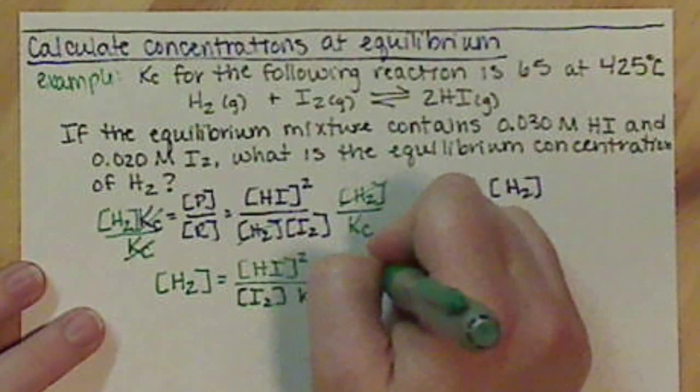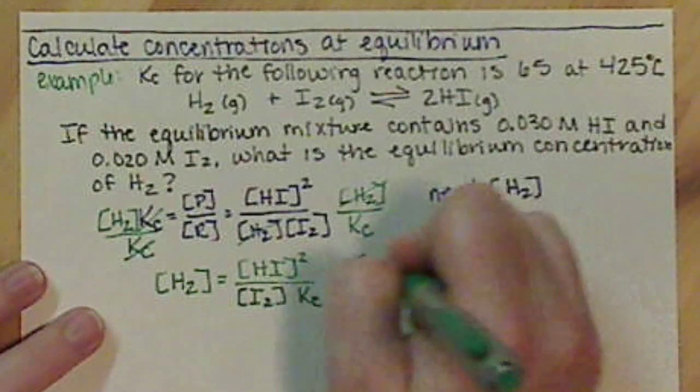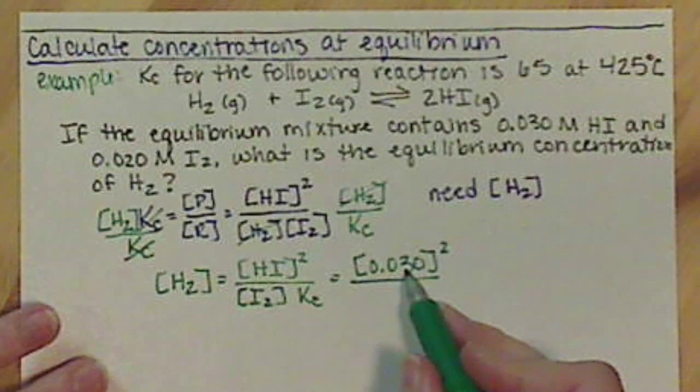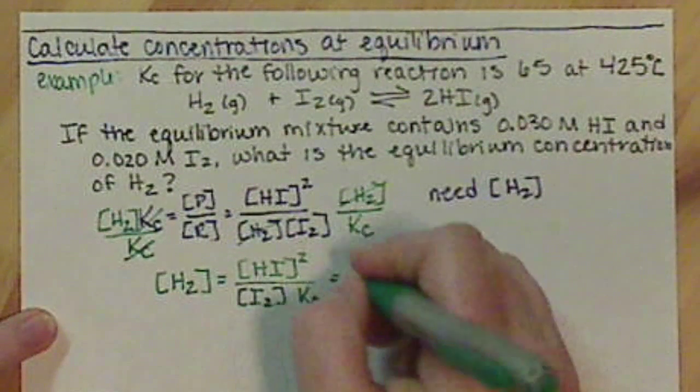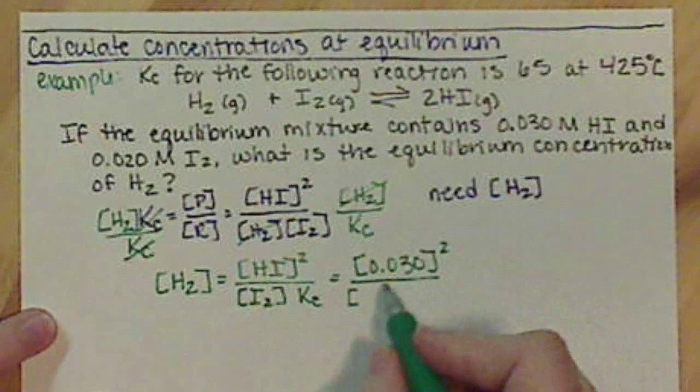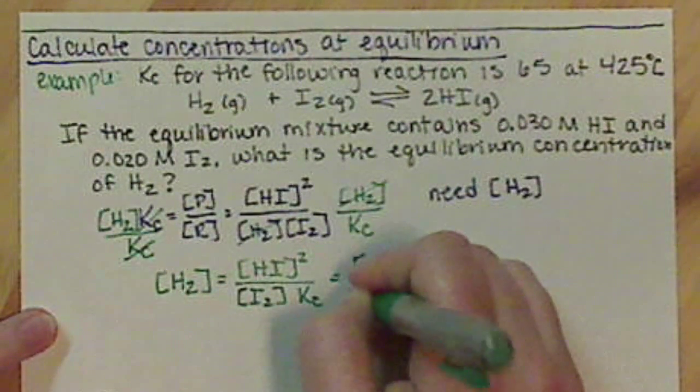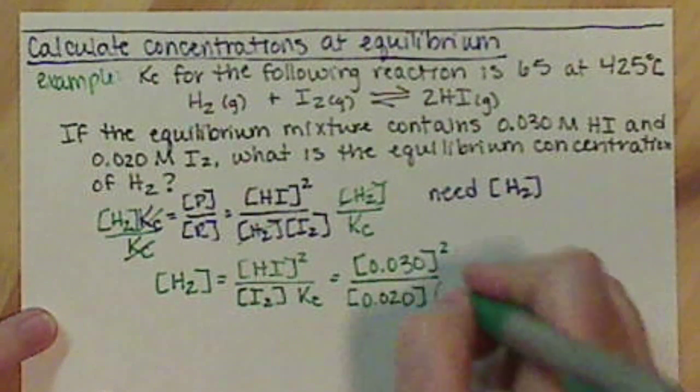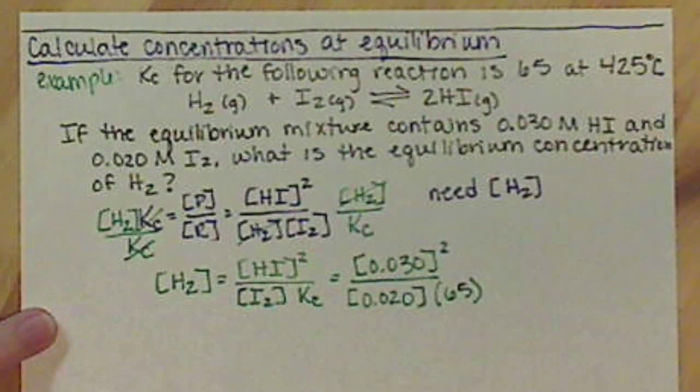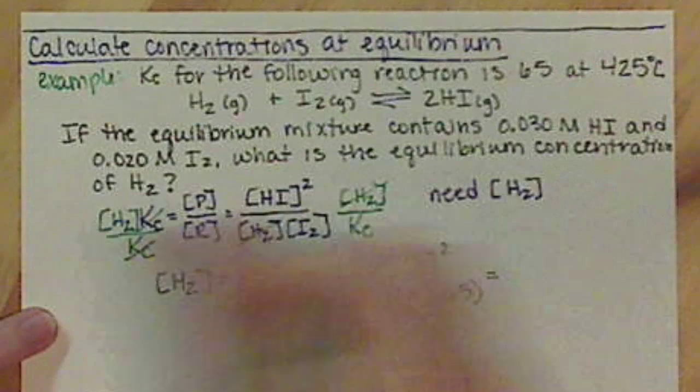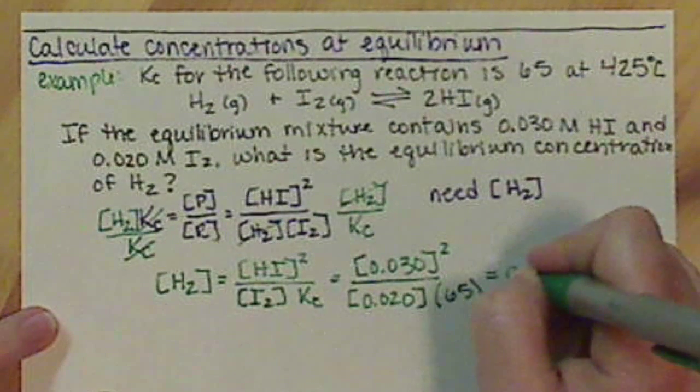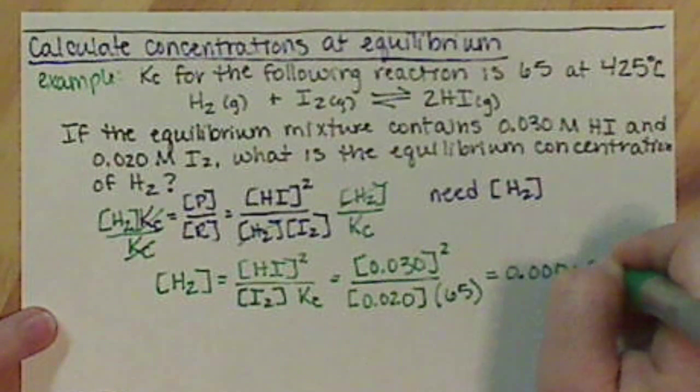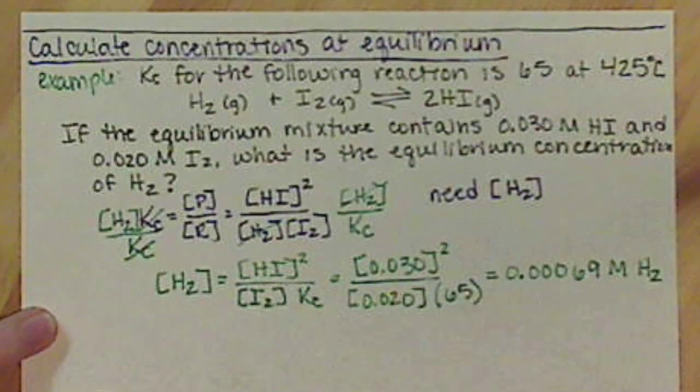So I have 0.030 squared. That's my concentration of my hydrogen iodide. I'm going to divide that by our concentration of iodide, and we have that as 0.020. And we're going to multiply that by our Kc value, which is 65. If we calculate that out, we're going to end up with 0.00069 molar hydrogen.